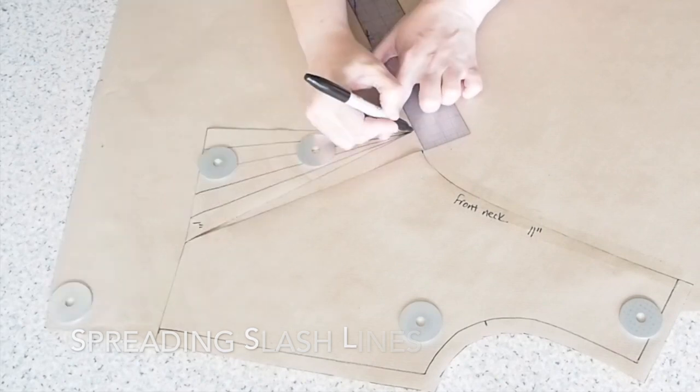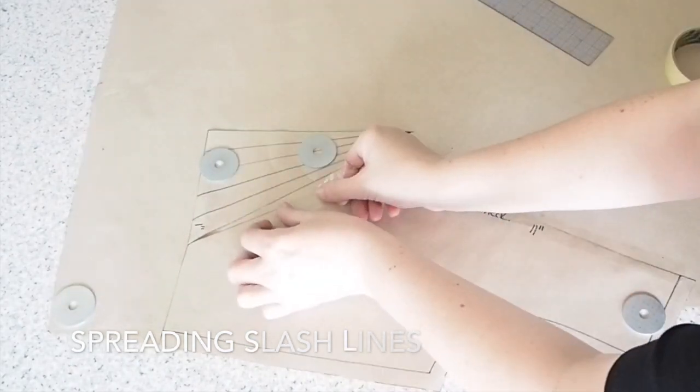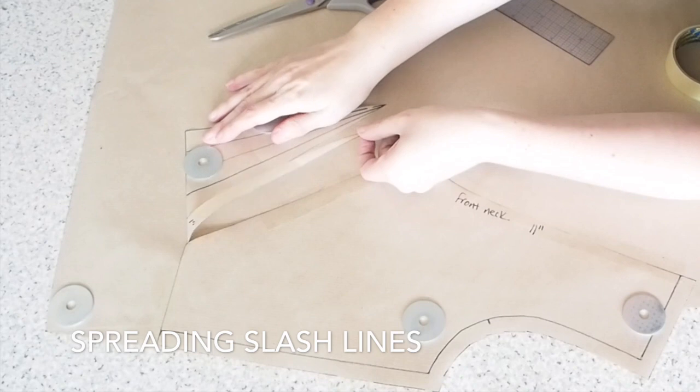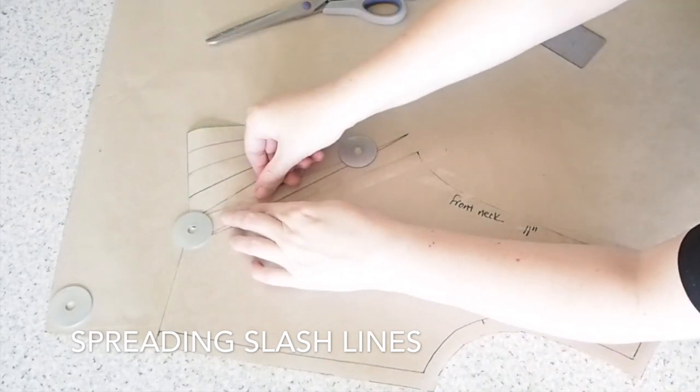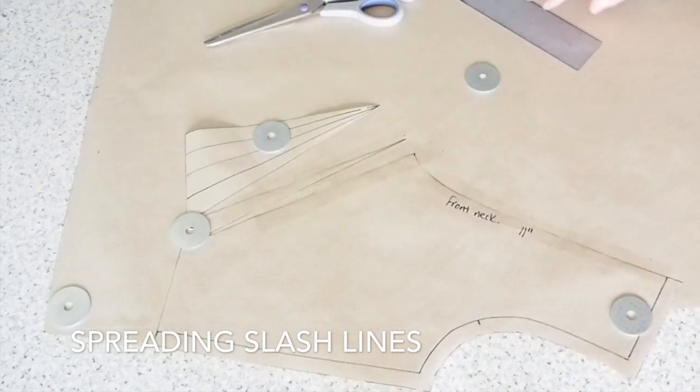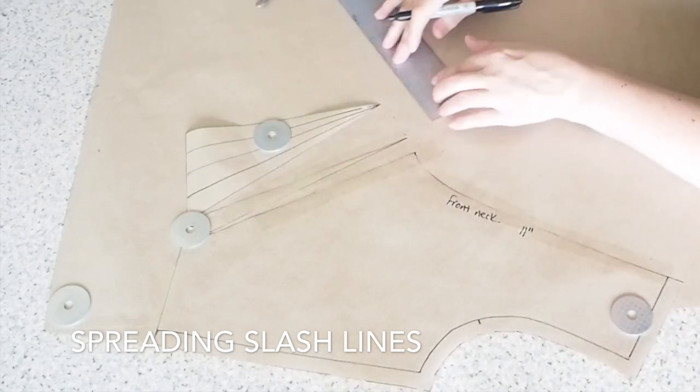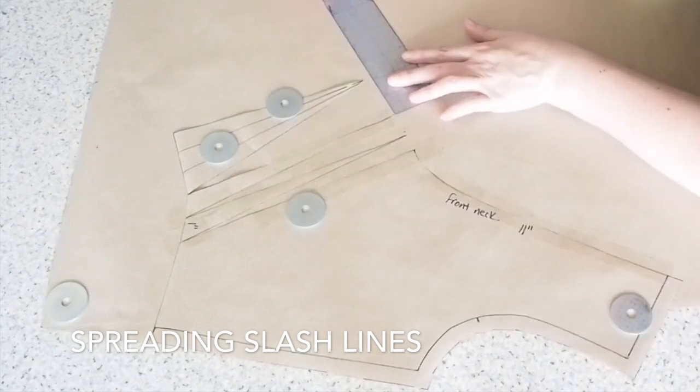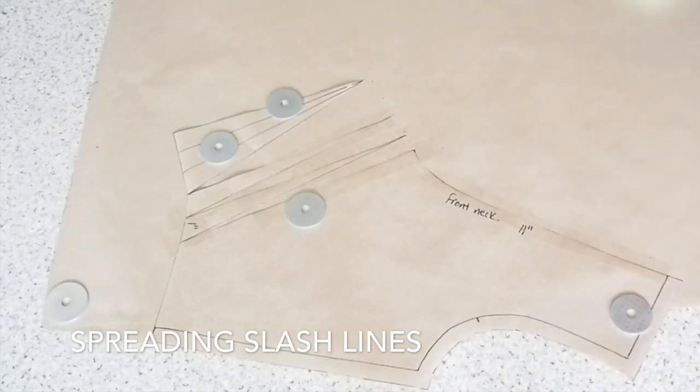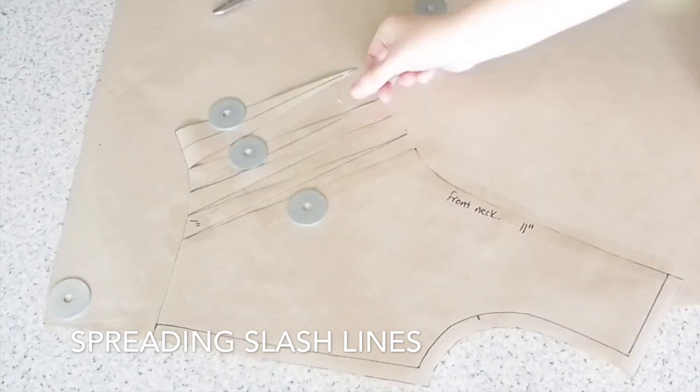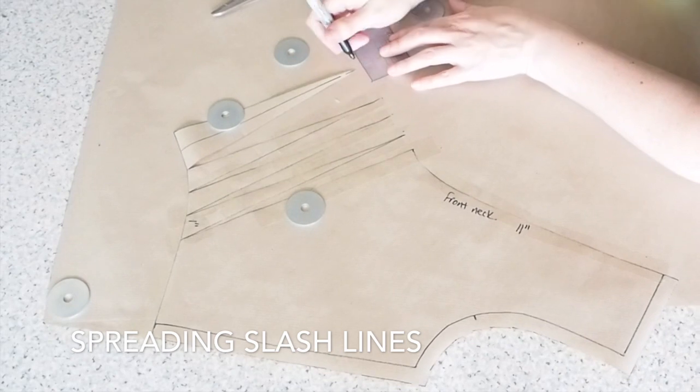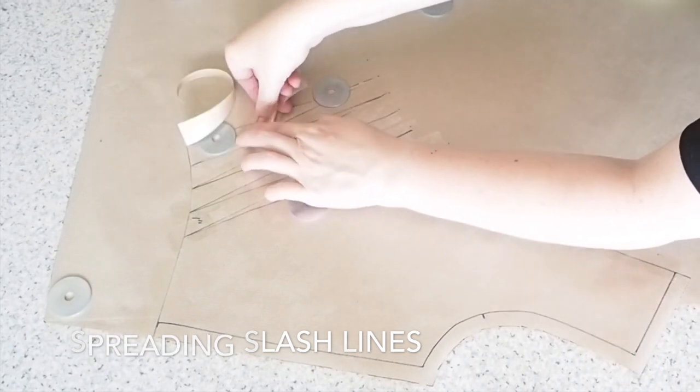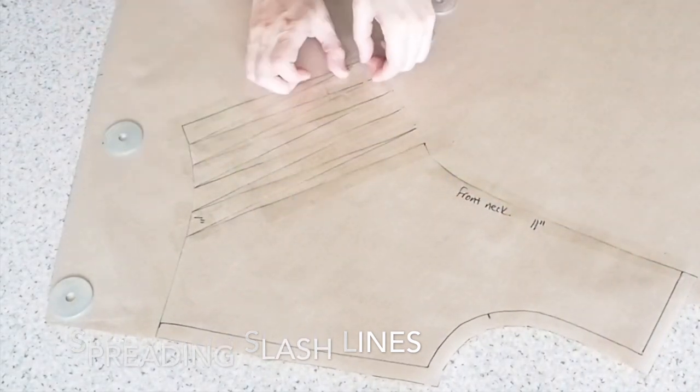And now starting to slash and spread. So I've cut through my first line. I've spread that by one inch. And when I'm cutting, I'm cutting directly through the line you see me mark. Cutting right down to the waist, but not through the waist. Spreading my cut piece by one inch. And once I'm happy everything's nice and flat, just sticking it all in place. So marking my one inch. Cutting through my slash line to the waist. Just making sure everything's lying nice and flat. And sticking everything in place.